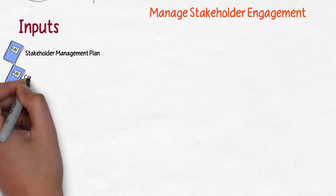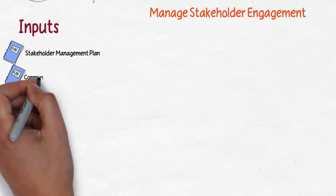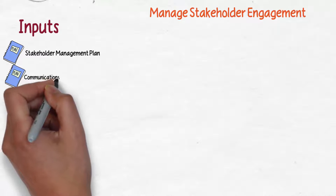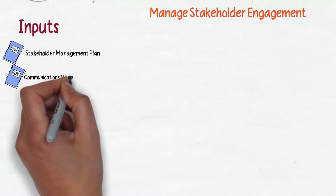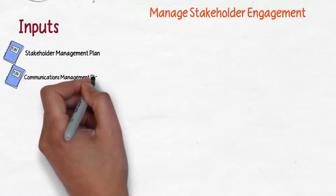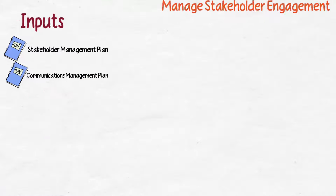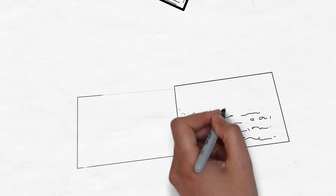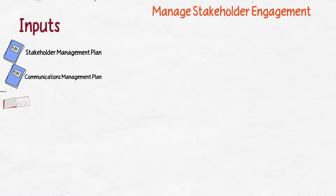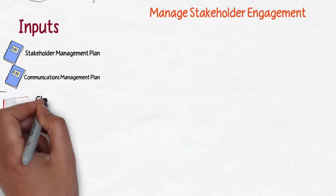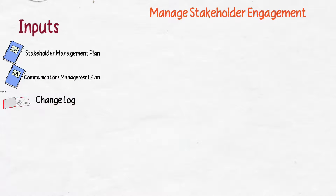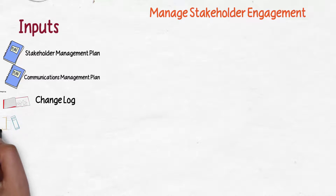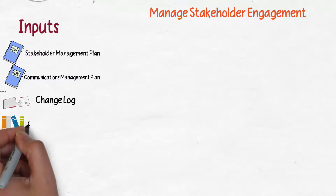You can argue pretty much any of the project management plans could be an input here, but really let's highlight the communications management plan, because that's how we decided how we are going to work and communicate with them. Additionally, any changes that have happened or occurred, whether in the plans or the work being done, needs to be an input here — and that would be the change log.